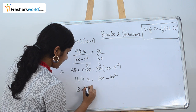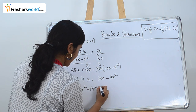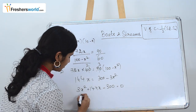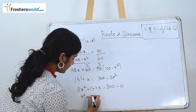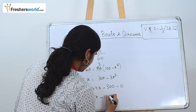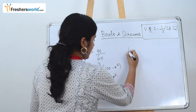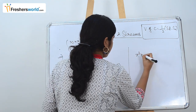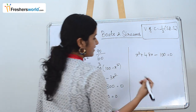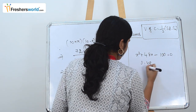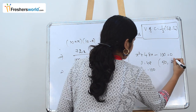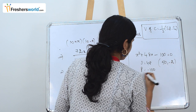Bringing everything to one side: 3x squared plus 144x minus 300 equals 0. Dividing everything by 3 gives: x squared plus 48x minus 100 equals 0. Using factoring, sum equals 48 and product equals minus 100, which gives factors 50 and minus 2.